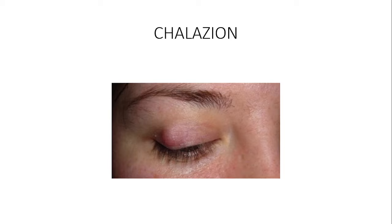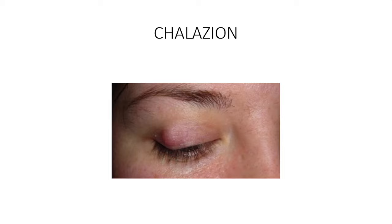Another problem chalazion can cause is pressing on the cornea and causing astigmatism. So the person may have blurred vision because the eyelid drooped — blepharoptosis — or because the lesion is pressing on the cornea causing astigmatism. Additionally, the chalazion may press on the cornea along the axial length and cause hyperopia, which is another cause of decline in visual acuity. It can also cause disfigurement of the eyelid margins and cosmetic problems.